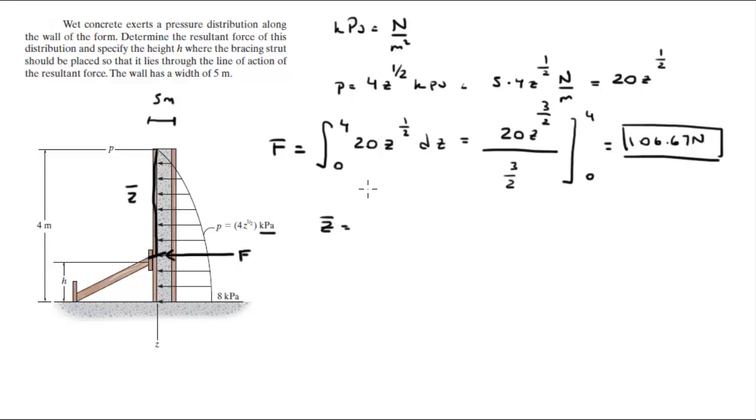z bar is given by the integral of z times 20z to the 1/2. You just gotta multiply z by the function you had before, dz from 0 to 4, and you gotta divide that by the force, the equivalent force that we found before, which is 106.67.